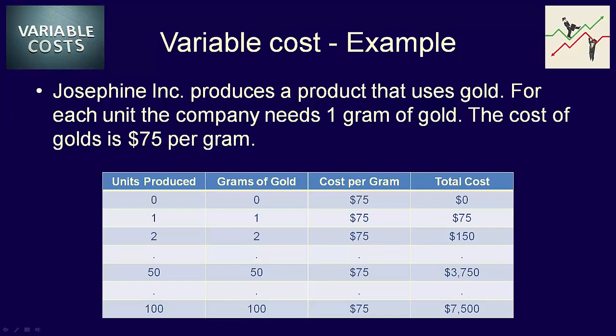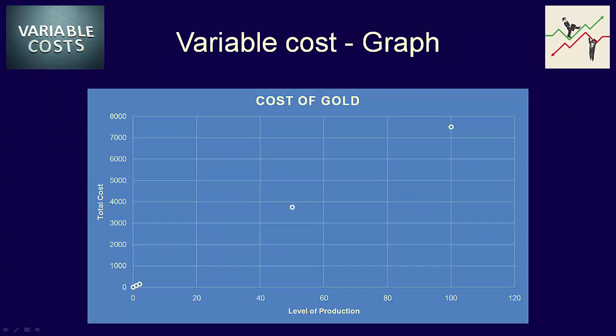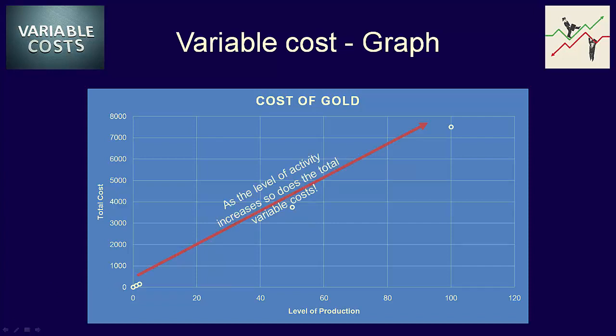We can also use a graph to show cost behavior. On this graph, we've made the y-axis the total cost and the x-axis is the level of activity, which in this case is the number of units the company produces. How does the cost of gold behave as the number of units produced increases? If we produce 0 units, it costs us nothing because 0 times 75 is equal to 0. If we produce only 1 unit, our total variable cost will be 75, and if we produce 2, total variable cost is 150. If we produce 100 units, our total variable cost will be $7,500, which is 100 multiplied by 75.